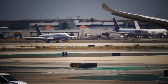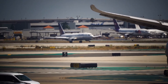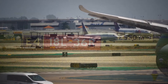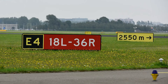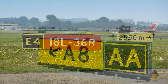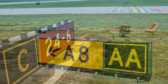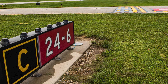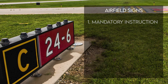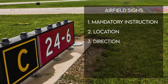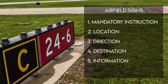In this video we'll be learning about various airport signs that provide information useful to pilots during takeoff, landing and taxiing. There are six types of signs installed on airfields: mandatory instruction signs, location signs, direction signs, destination signs, information signs, and runway distance remaining signs.